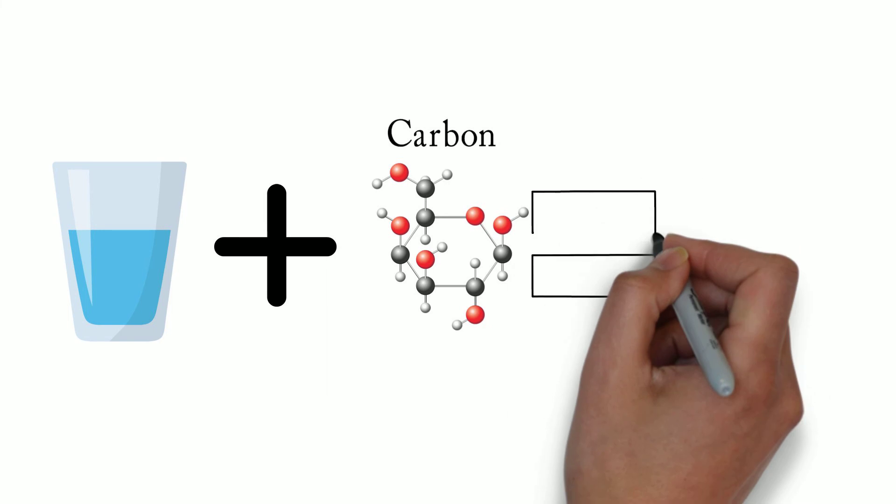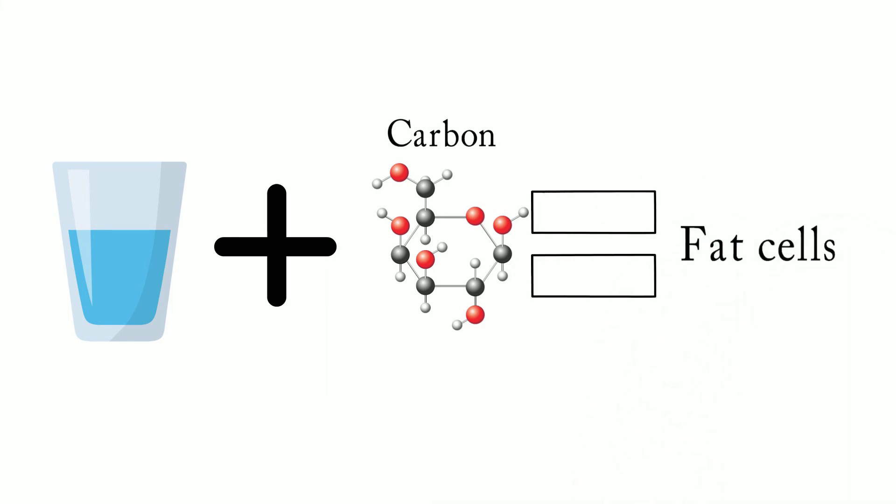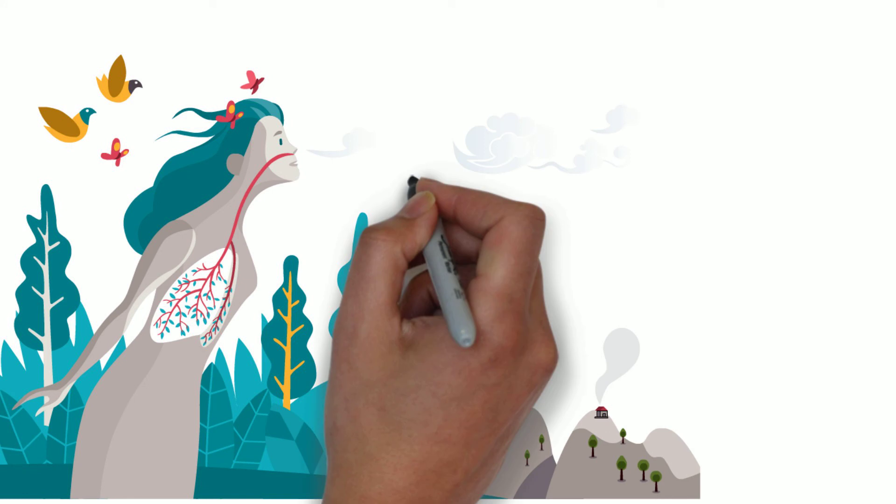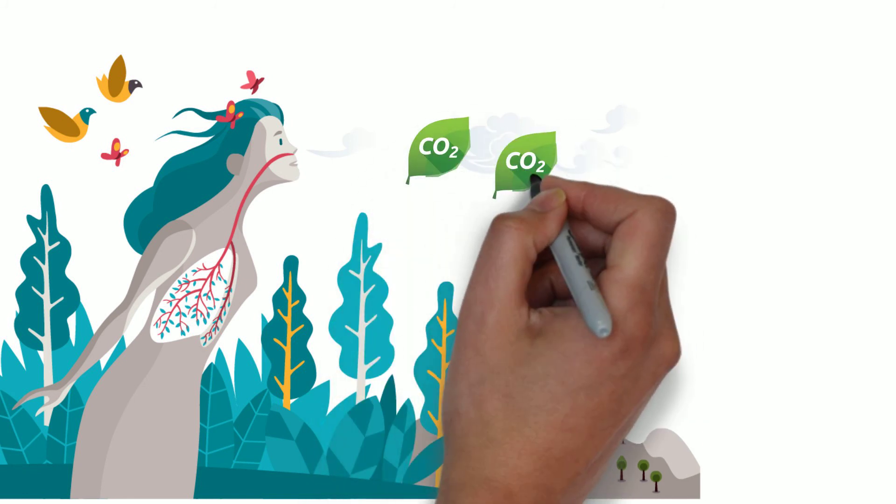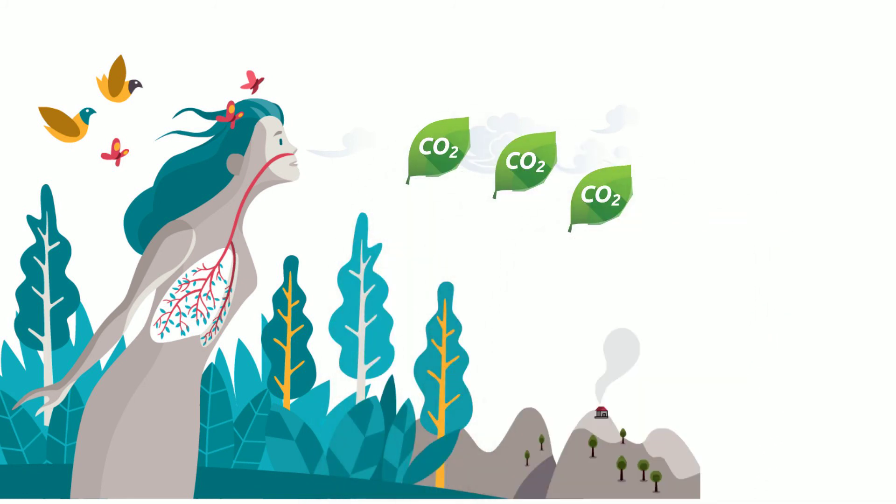Fat cells are basically made up from water and carbon. Whenever we burn these fuels, carbon and water are released. So, eventually, we get rid of the fat cells by breathing them out as CO2 and pee the water out naturally.